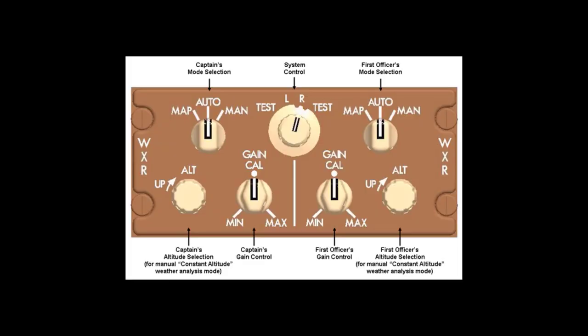If there is ever any doubt the radar is working properly, several checks can be done. A great way to check the system is the radar radome confidence check — this verifies the radar is functioning and identifies any radome issues. At cruise altitude, select map mode and verify the radar will paint ground returns. The amount of ground returns will vary somewhat depending on altitude and the type and elevation of the terrain below. If ground returns aren't visible, there could be an issue somewhere in the system. In dual systems, you can also compare one side to the other — switching between left and right systems uses a different set of transmitter, receiver, and radar processor modules.